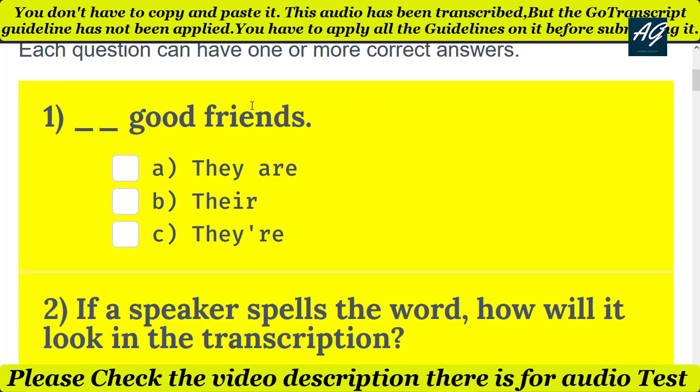The first question is a grammatical question. The question is 'dash good friends.' There are three different options and the correct options are A — 'they are' — and C — 'they are' — so both A and C are correct options for the first question.